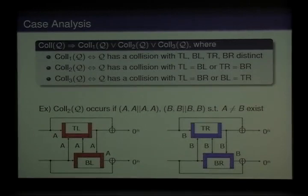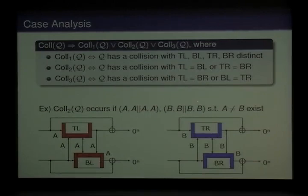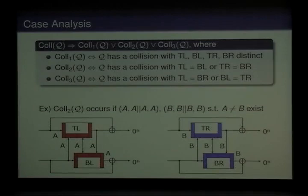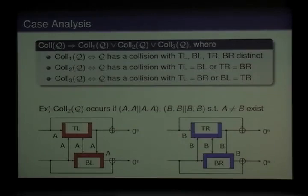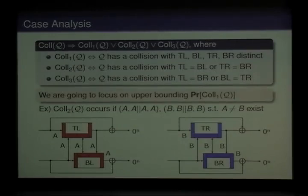By the way, the four queries forming a collision might not necessarily be distinct. As an example, if we have only two queries of this form, then one query can be placed at the TL position and the BL position, and the second query placed at both the TL position and the BR position, and as long as A and B are different, we have a collision. So we can classify this predicate into three types according to the equality relations between the four queries. In this talk, we are going to focus only on the first case, where all the queries are different, because this case can be regarded as the hardest and most general case.